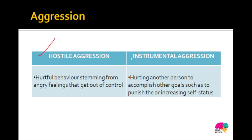Another two types of aggression are hostile aggression and instrumental aggression. Hostile aggression is a hurtful behavior that occurs because of your angry feelings — when you are so angry at somebody that you get out of your own control, and in that rage, in that fit of the moment, you display very aggressive behavior. For example, you feel so angry at a person who lied or misguided you that in blind rage you pick up a chair and throw it at them.